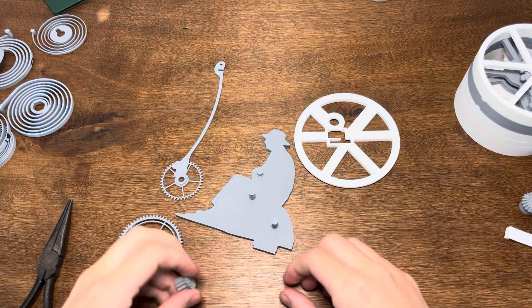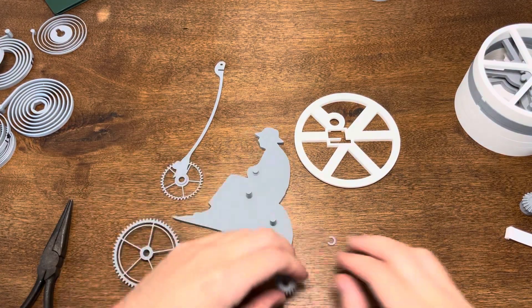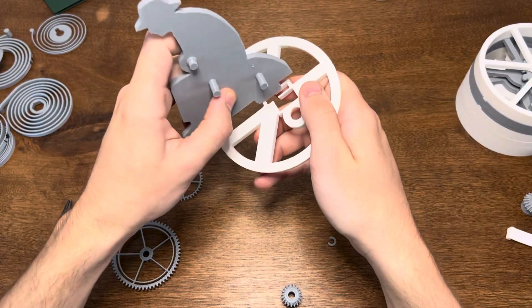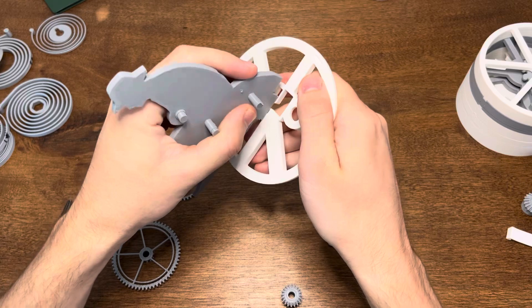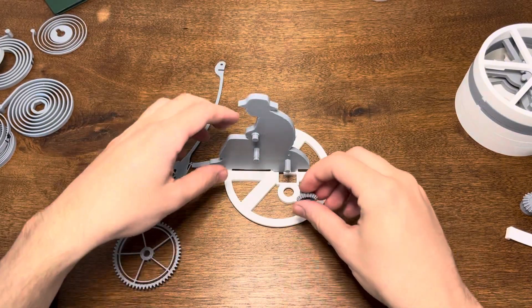So now we're going to head into the build of the fisherman. It's pretty similar to the cat tea timer build. It actually has the same mechanism and the same gear ratio. So if you've done the cat one you can do this one pretty simply.